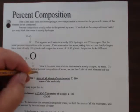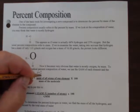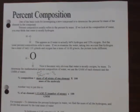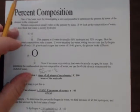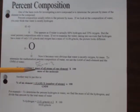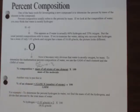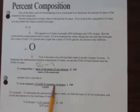A percent is always the same thing: part over the total times 100. In this case, the percent we're looking for is the mass of one element, and the total is the mass of the whole molecule. One way to look at it is: take the gram atomic mass of the elements you're looking for and multiply it by how many atoms you have — that's your top number — and your bottom number is the mass of the whole thing.